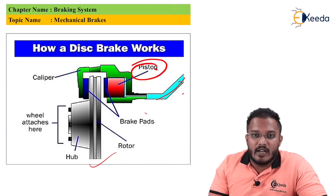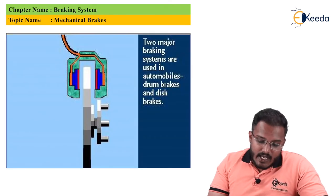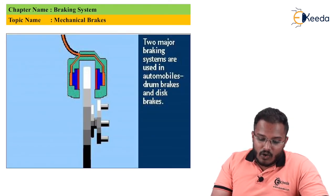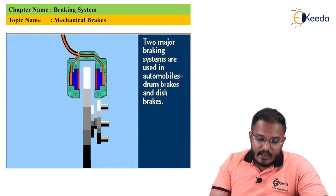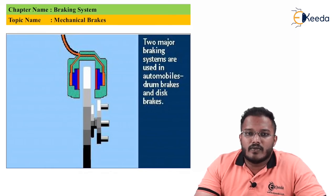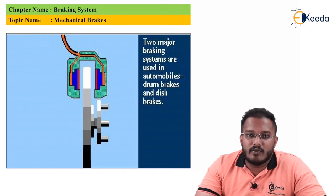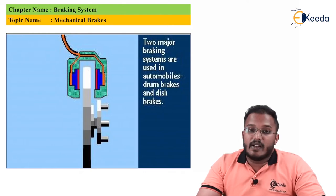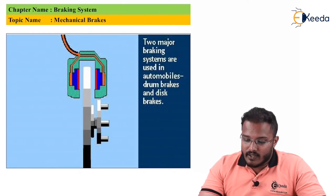Two major braking systems are used in automobiles: drum brakes and disc brakes. Disc brakes will be used in four-wheelers and two-wheelers also. The same principle will be there for disc brakes, but in a disc brake the brake pads squeeze the rotor instead of the wheel, and the force is transmitted hydraulically instead of through a cable.